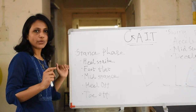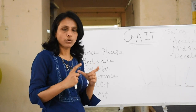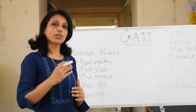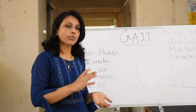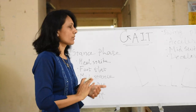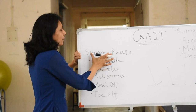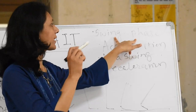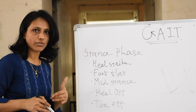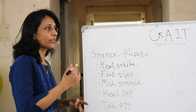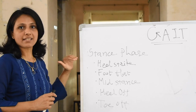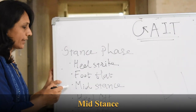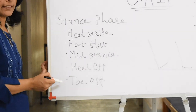The stance phase is when the foot — the whole foot or part of the foot — is in contact with the ground. The swing phase is when the whole extremity is off the ground. Each phase has subdivisions. The stance phase has five subdivisions: first is heel strike, then foot flat, then mid stance, then heel off, and then toe off.